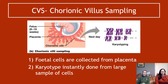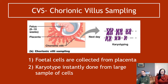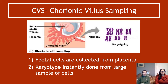In terms of CVS — it stands for chorionic villus sampling, though you don't need to know that; CVS is sufficient. The idea is that fetal cells are collected from the placenta surrounding the baby.